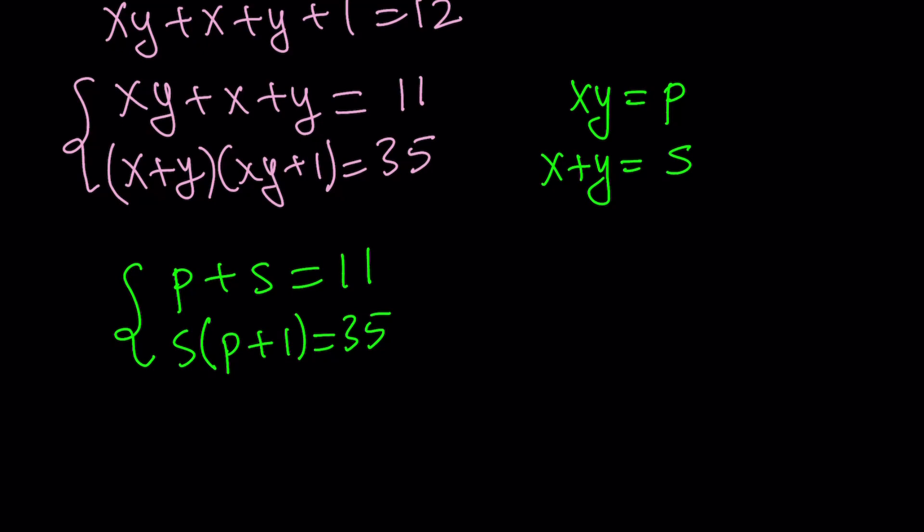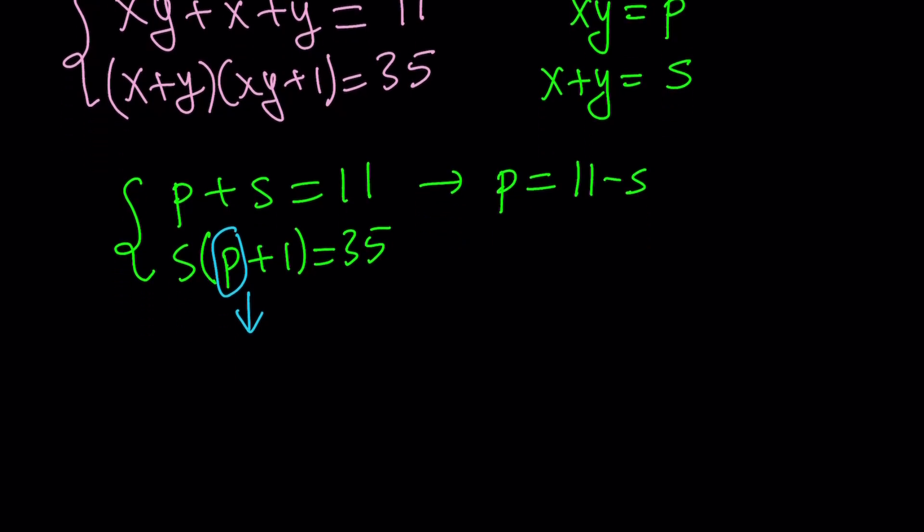I'm going to use substitution here because from the first equation, it's easy to isolate p, right? I can go ahead and write p as 11-s. And then I can just go ahead and substitute that here. I can replace in the second equation, not the first and second that I named, but in the second equation of this system, I can basically replace p with 11-s.